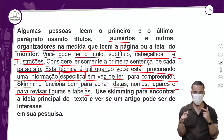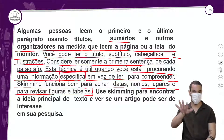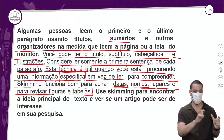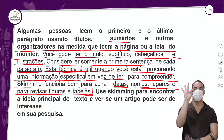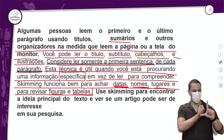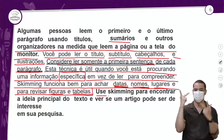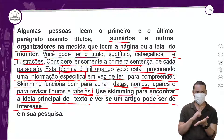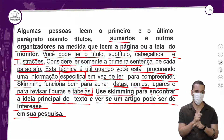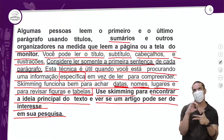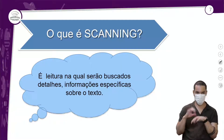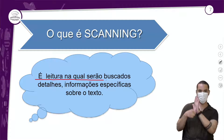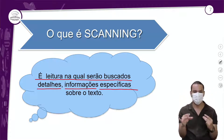No Skimming você presta atenção em elementos como datas, nomes, lugares, figuras e tabelas. Quando um texto tem um infográfico com muitos números, você consegue aplicar o Skimming tranquilamente. Você usa o Skimming para encontrar a ideia principal do texto e ver se um artigo pode ser de interesse em sua pesquisa — tanto no Enem quanto em qualquer situação da sua vida. E agora o Scanning: ele vai ser feito depois do Skimming. É a leitura na qual serão buscados detalhes e informações específicas sobre o texto.